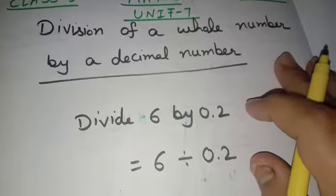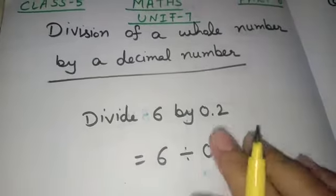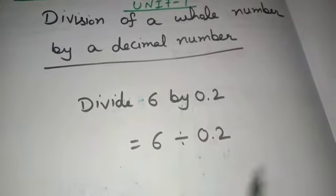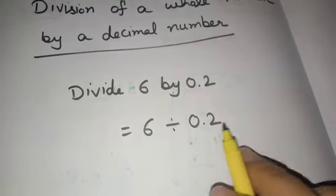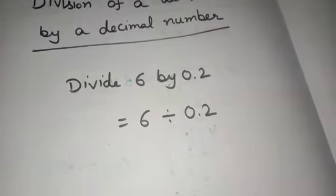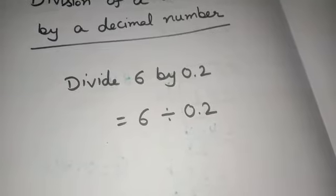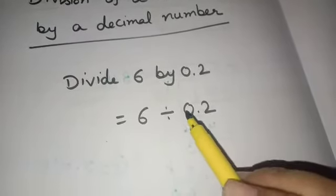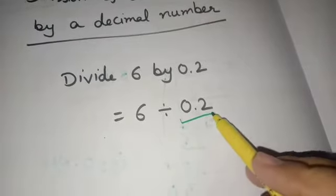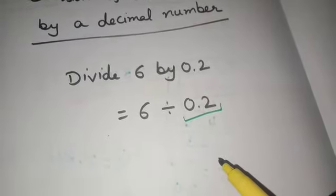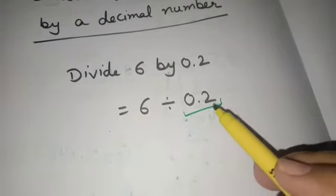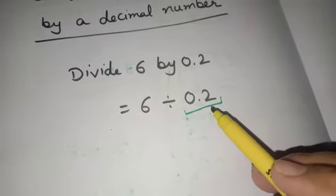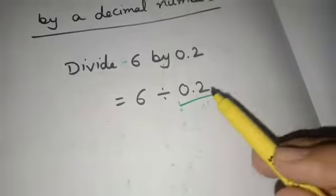Let's take an example. Divide 6 by 0.2. The first number is called dividend, second is called divisor. As we have discussed in previous worksheet, here divisor is in decimal form. What we have discussed in previous worksheet? When the divisor is in decimal form we use the method of fractions.